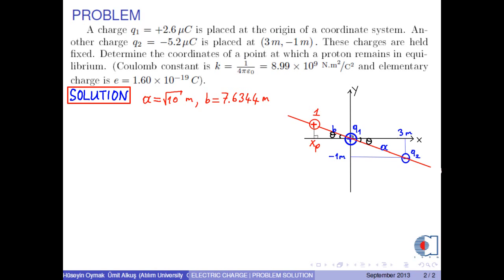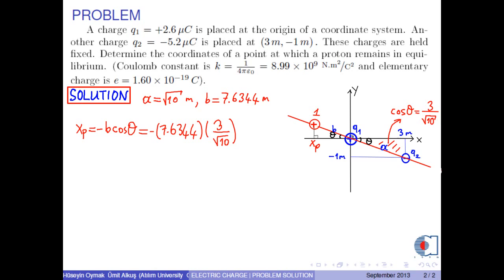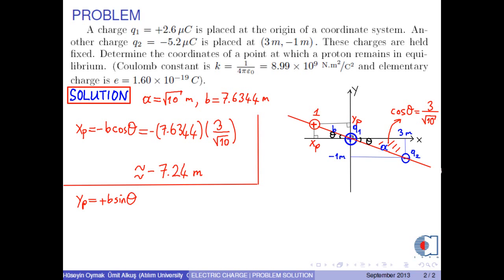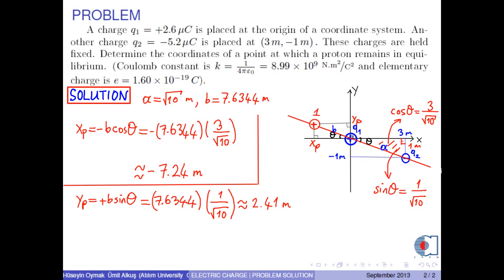Now, according to the figure, the x-component of the point is −B·cos θ, since it is in the negative x-axis. We know B, and cos θ = 3/√10 from the right triangle. Therefore, the x-coordinate is approximately −7.24 meters. The y-component is +B·sin θ, since it is in the positive y-axis, and sin θ = 1/√10. So the y-coordinate of the equilibrium point is approximately 2.41 meters.